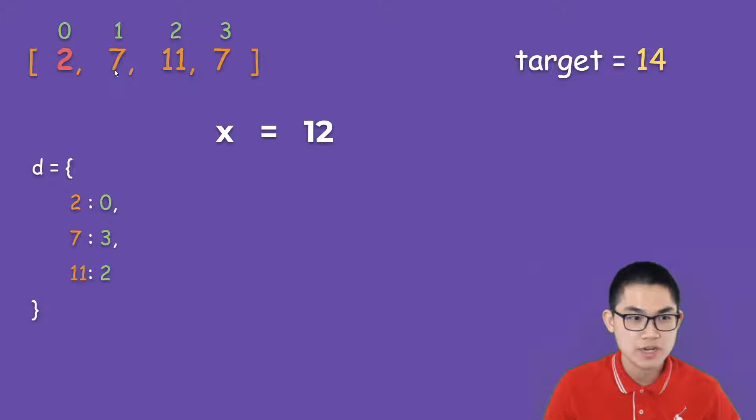So we move on to the next number in the array, which is 7. So x plus 7 is 14, x is 14 minus 7, and x is 7. We use this number 7 and look inside the dictionary. Do we have number 7 in here?